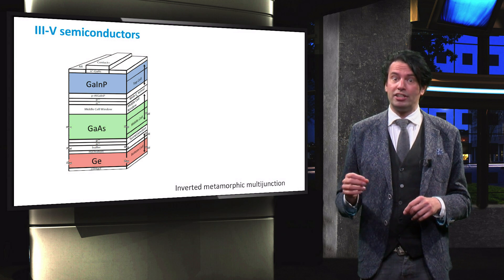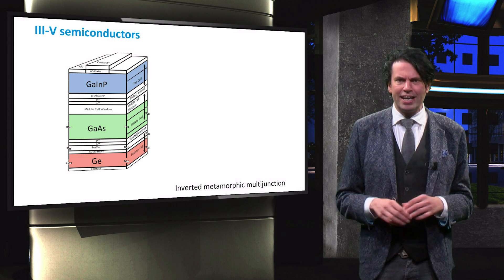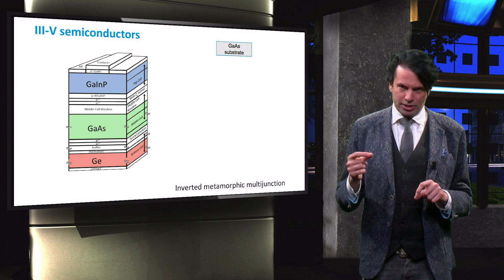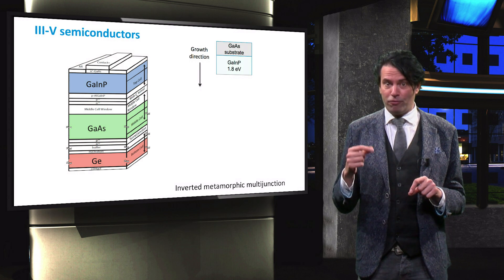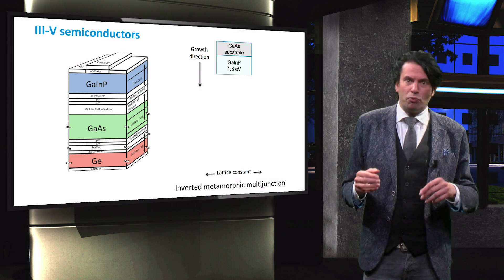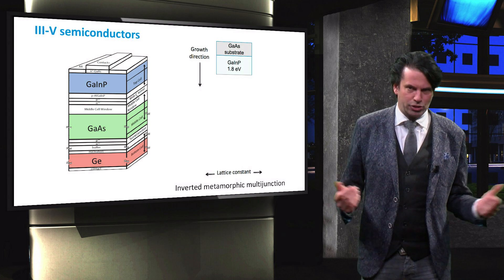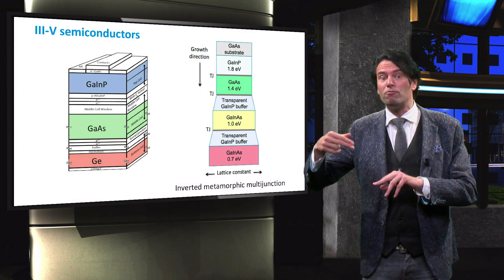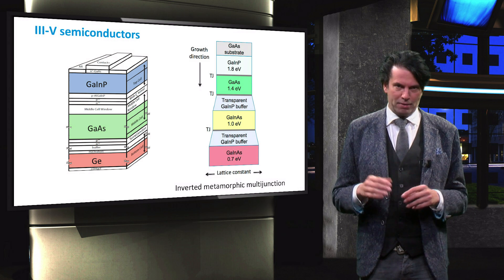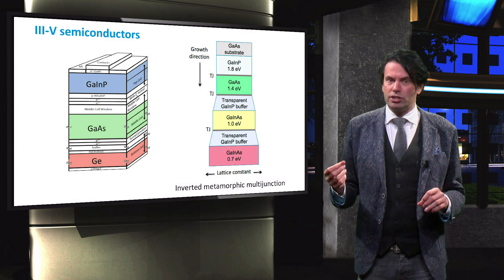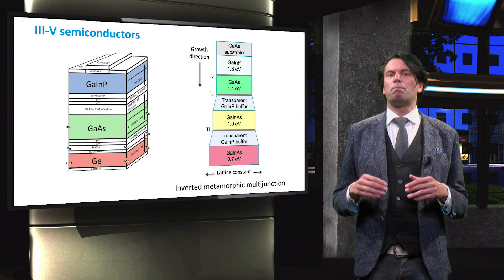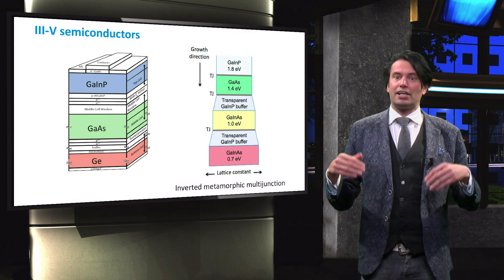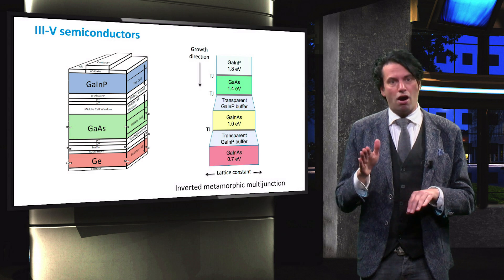Another promising design, known as an inverted metamorphic multi-junction device, takes a different approach. This design starts with a crystalline gallium-arsenide substrate. A gallium-indium-phosphide layer is deposited on top of this substrate, which will adopt the crystalline structure of the gallium-arsenide substrate. Three more III-V alloys are deposited on top of the gallium-indium-phosphide layer with decreasing bandgap energy. Since the used alloys are not lattice-matched, buffer layers are deposited between the gallium-arsenide and gallium-indium-arsenide alloys. Finally, the gallium-arsenide substrate is removed through a lift-off technique.